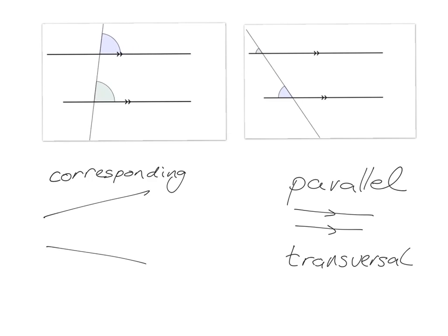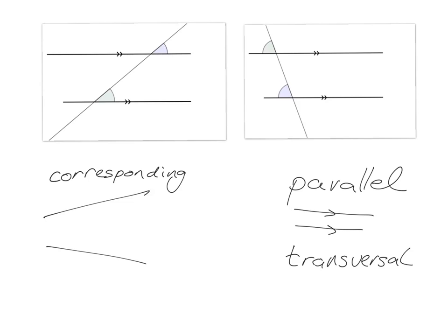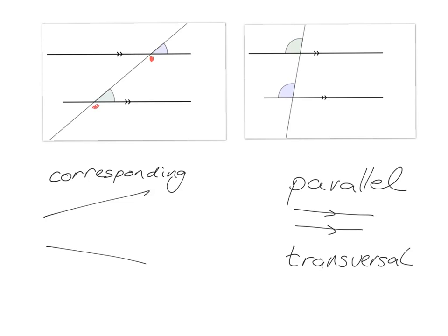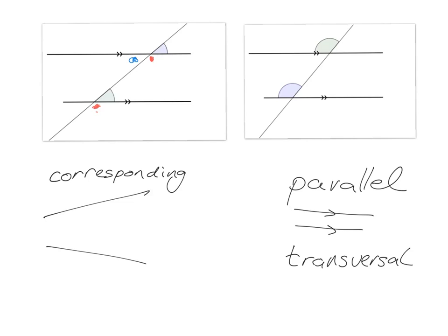Same story here. No matter where you put the transversal, looking on the left, this blue and this green will be the same size. So corresponding angles are going to be equal. You could also have, for example, this angle here and this angle here — they are also corresponding angles and will also be equal. Another pair of corresponding angles could be these ones here, below the parallel line to the left of the transversal. Both are below to the left, and as you move the transversal, they're going to be equal to each other.